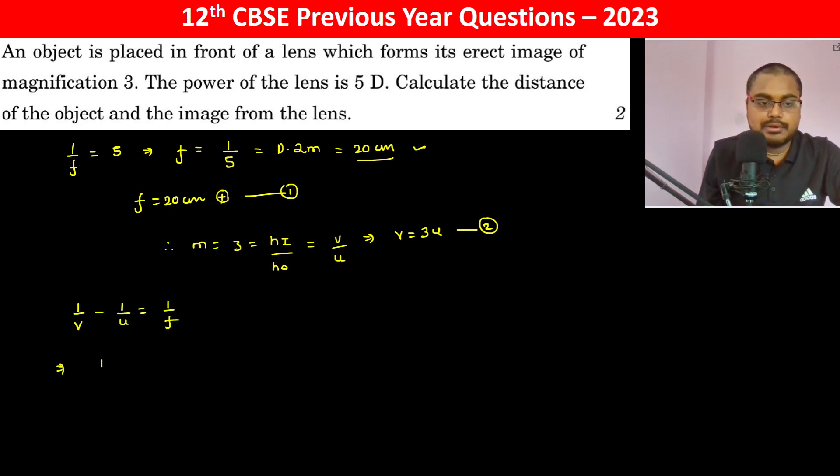Using the lens formula, 1/v minus 1/u equals 1/f. Substituting v = 3u: 1/(3u) minus 1/u equals 1/20 centimeters.